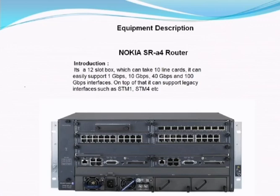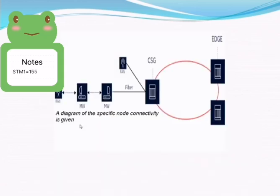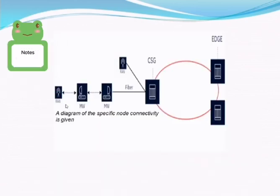It can also support legacy interfaces. As you know, STM-1 is equal to 155 Mbps and you can multiply 155 by 4 to get 2,048 Mbps. This is the node connectivity diagram.